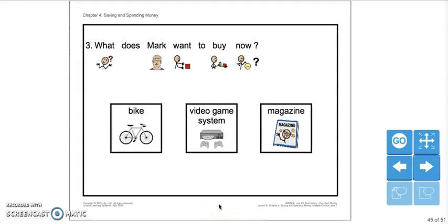What does Mark want to buy now? A bike, a video game system, or a magazine? That's right. Mark wants to save his money to buy a video game system.